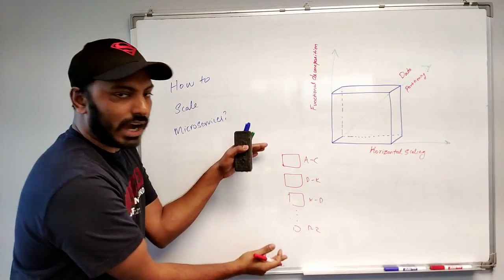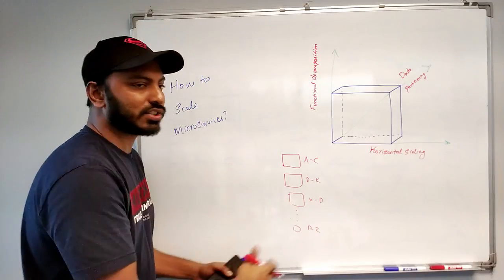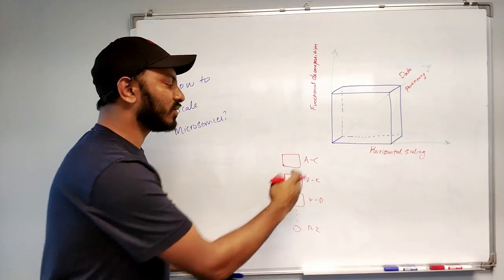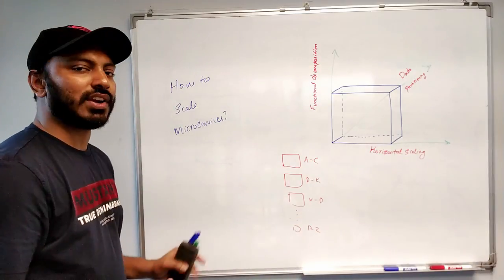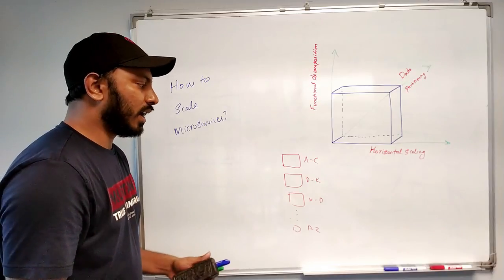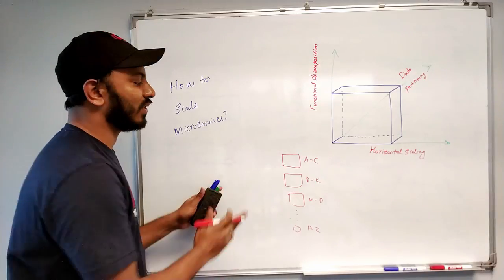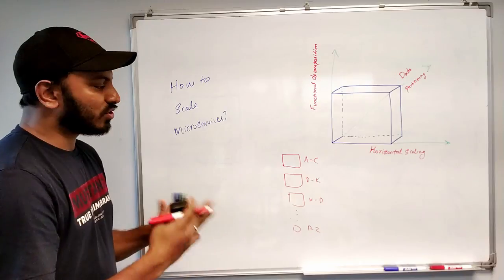So basically you're scaling out by partitioning data. This could be user id range or it could be user name starting letter or it could be any other strategy which you really like. We can use consistent hashing here as well to distribute the traffic. There are so many other techniques as well.